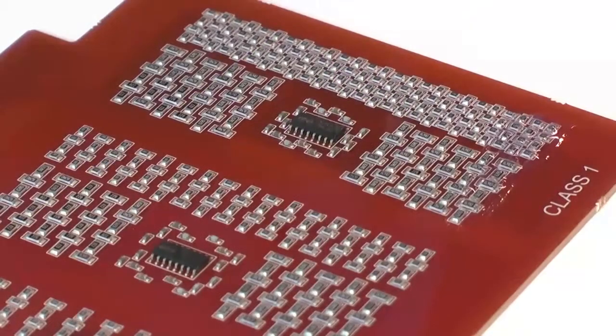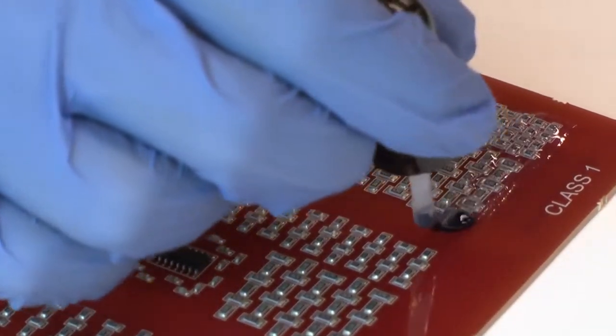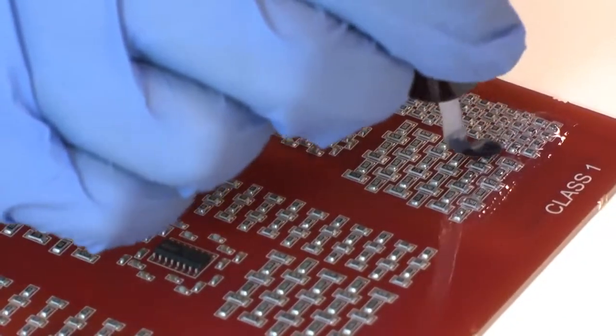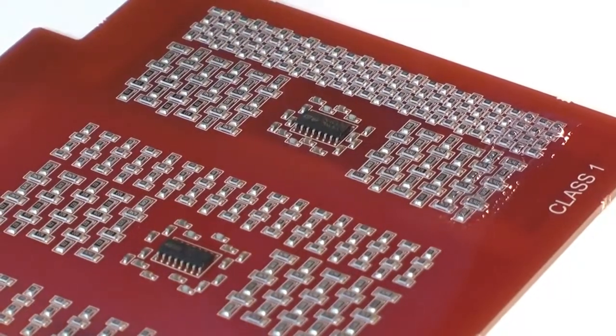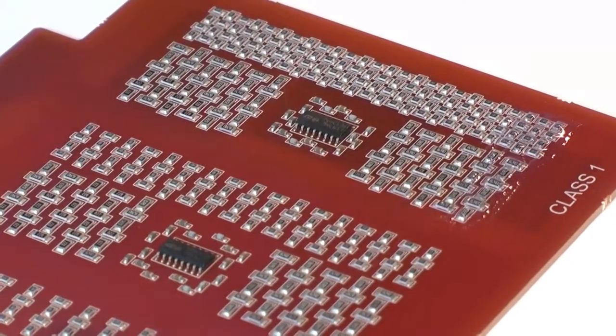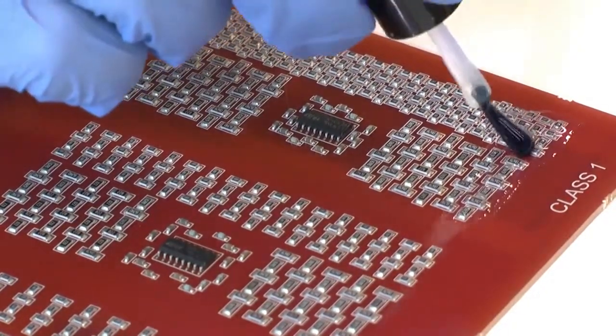Brush coating. As a general rule, Electrolube advises against using the brush coating method. As even with a skilled technician, there is a high potential to over-apply the coating. This being said, it can be a useful technique for repairing or touching up boards.